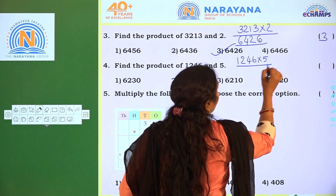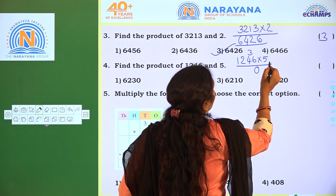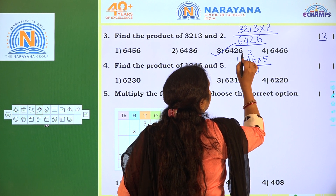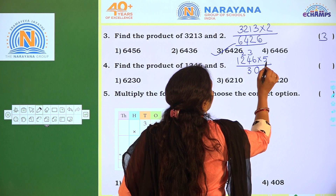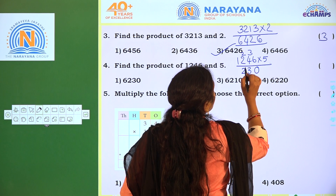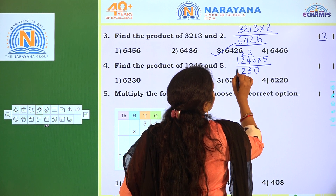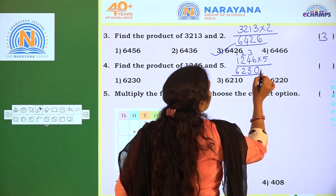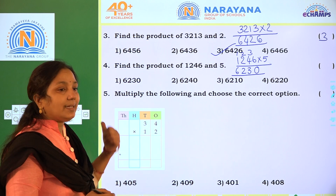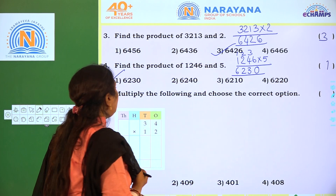Multiply: 5 6's are 30 — write 0, 3 regrouping. 5 4's are 20 plus 3 is 23 — write 3, 2 regrouping. 5 2's are 10 plus 2 is 12 — write 2, 1 regrouping. 5 1's are 5 plus 1 is 6. The answer is 6,230. The correct option is option 1.